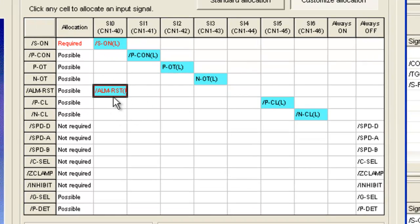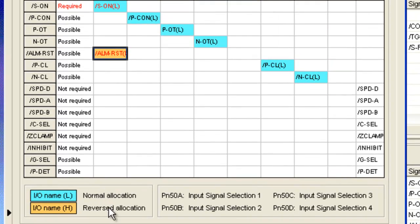You notice that is somewhat of a warning here. They turned the text red. But then not only that, I can click on it again, and that reverses the allocation, meaning instead of normally open, it's normally closed. And so now when I open the connection to pin 40, I'll reset an alarm. And when I close the connection to pin 40, I'll turn the servo on.